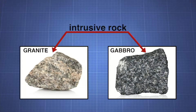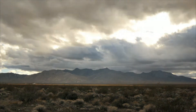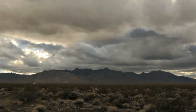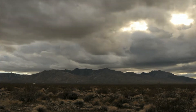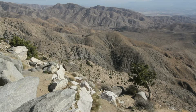Intrusive rocks, such as gabbro and granite, typically have large, well-formed crystals and a coarse mineral grain. The granite mountains, located in the Mojave Desert, once formed the deep core of a volcanic mountain range. The granite is now exposed because of the effects of weathering and erosion.